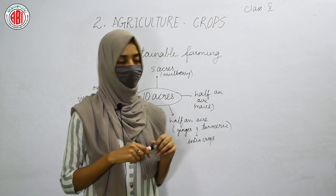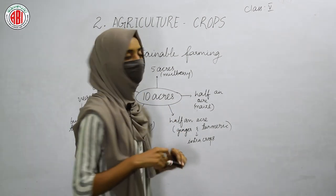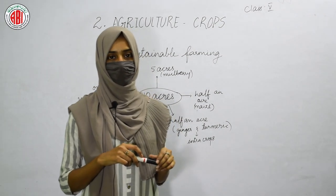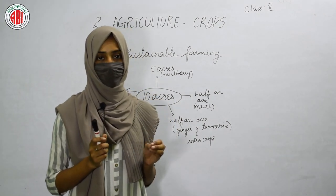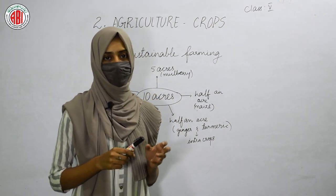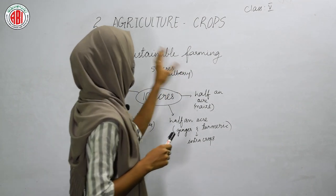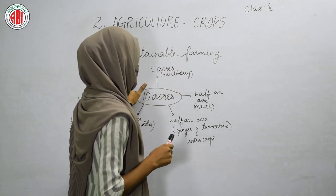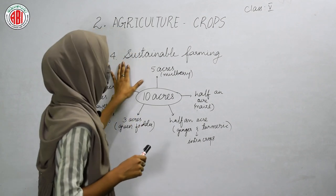In today's session I'm going to explain sustainable farming. What do you mean by the word 'sustainable'? Sustainable means supportable and maintainable — done in a proper manner. So farming that can be done in a supportable manner is called sustainable farming.